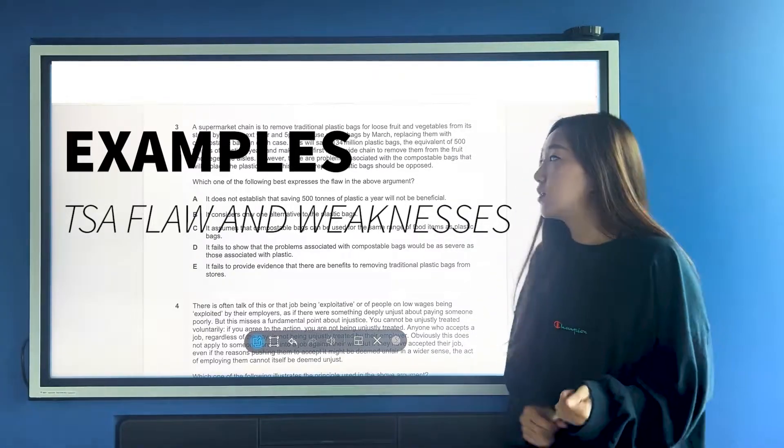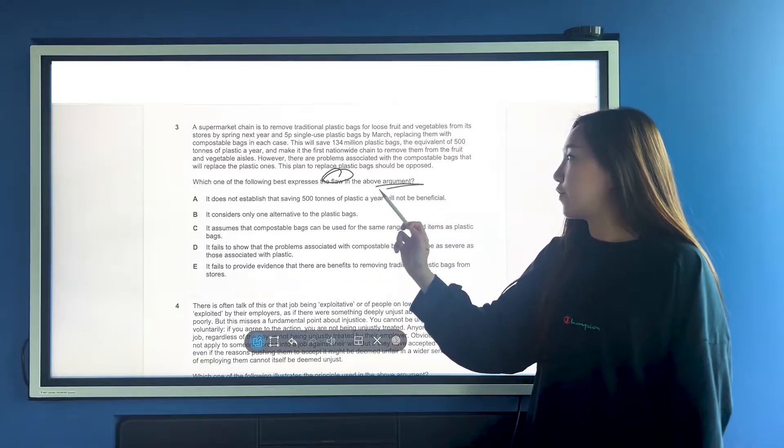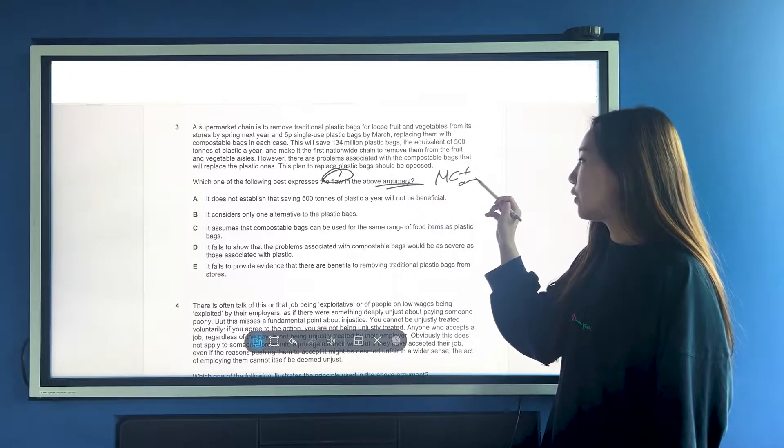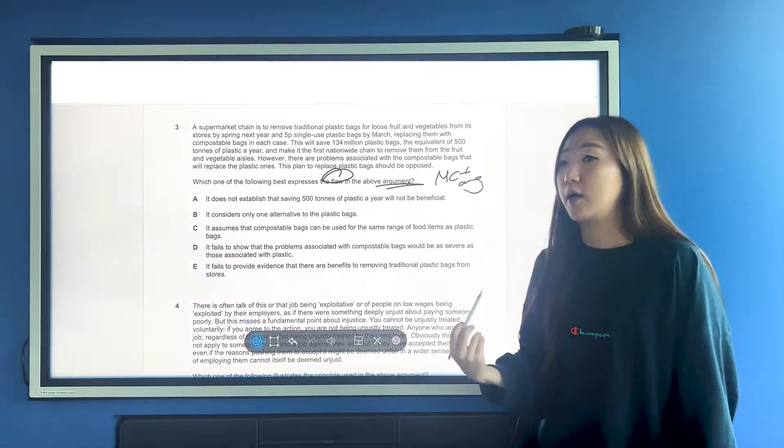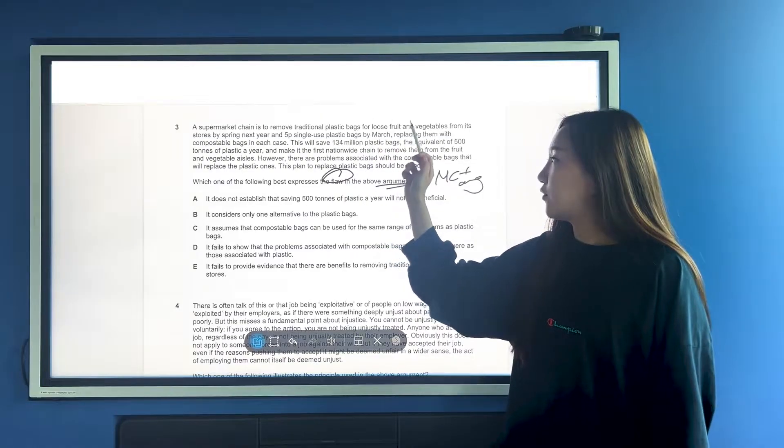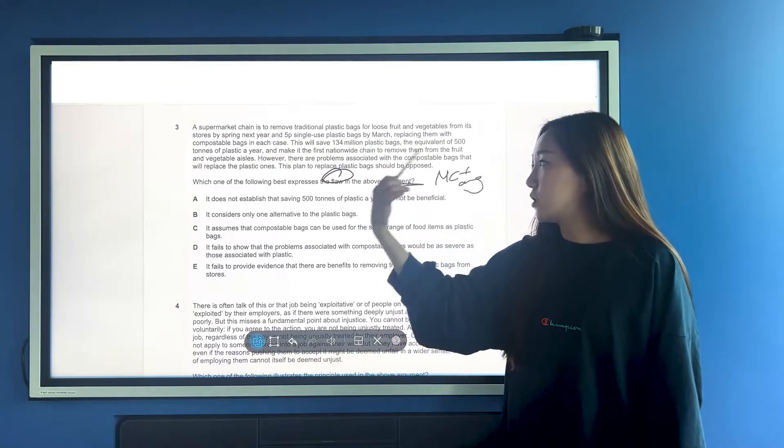Right, so let's have a look at some actual examples now. We're starting off with question three, it's a flaw question of the argument. In order to find this, remember, main conclusion and argument - you have to clearly identify so you know what you're working with. We're looking at the case of a supermarket using plastic bags with their fruits and vegetables and they want to replace them with compostable bags.